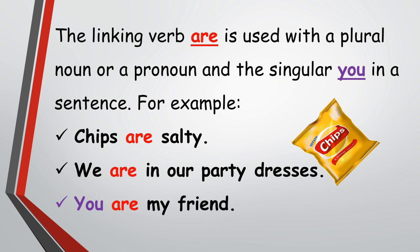The linking verb 'are' is used with a plural noun or a pronoun, and also with a singular 'you' in a sentence. For example: 'Chips are salty,' 'We are in our party dresses,' 'You are my friend.' In these examples, chips, we, and you are the subjects.